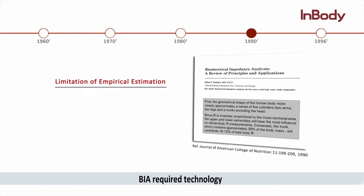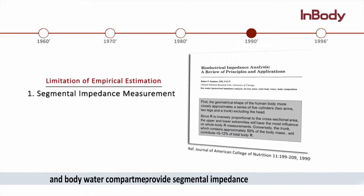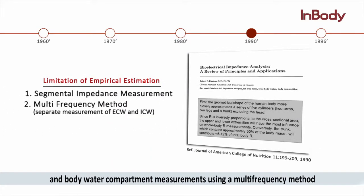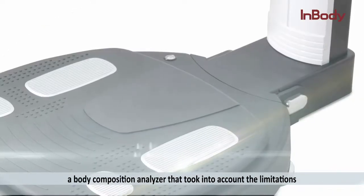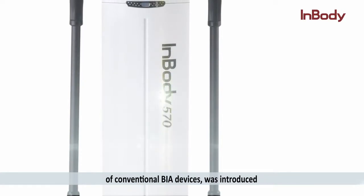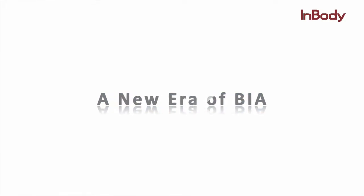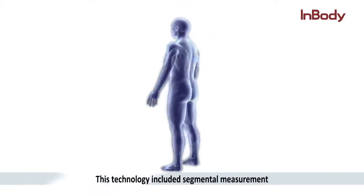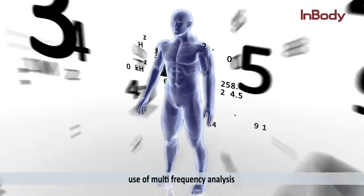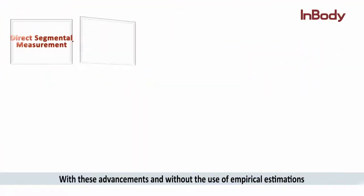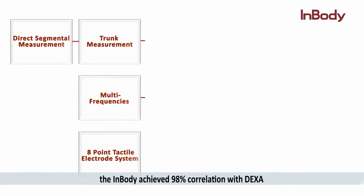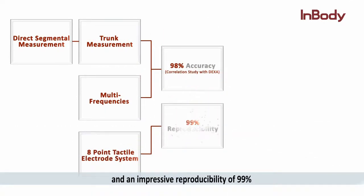BIA required technology that could provide segmental impedance and body water compartment measurements using a multi-frequency method. Then in 1996, the InBody — a body composition analyzer that took into account the limitations of conventional BIA devices — was introduced. This technology included segmental measurement, multi-frequency analysis, and an eight-point electrode system. With these advancements, and without the use of empirical estimations, the InBody achieved 98% correlation with DEXA and an impressive reproducibility of 99%.